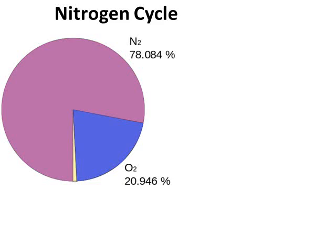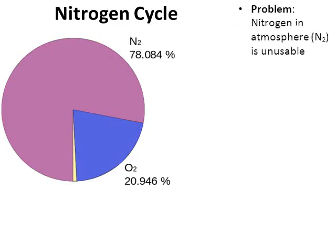In this video we're going to go over some of the stages and facts of the nitrogen cycle. One problem that we're going to encounter when talking about the nitrogen cycle is that the majority of our atmosphere — about 78% of our atmosphere — is filled with nitrogen. But that's not the problem. The problem is that the nitrogen is unusable to life.